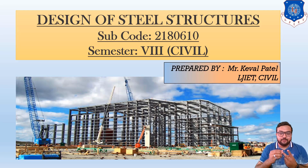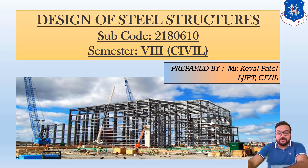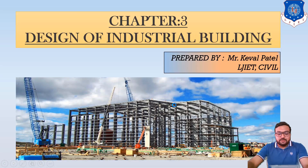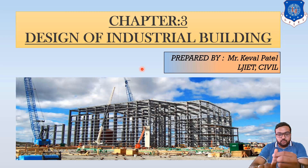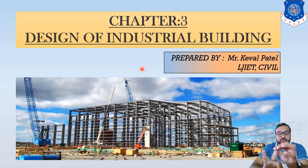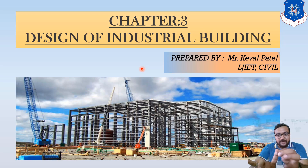The second one is Design of Industrial Building. This is our second last chapter of the course. In Design of Industrial Building, there are two types of examples. First, how much dead load, live load, and wind load is calculated while designing any structural component. And second, you have to design for Purlin.